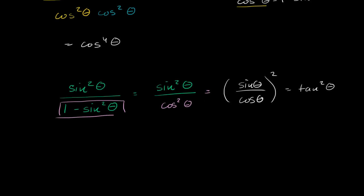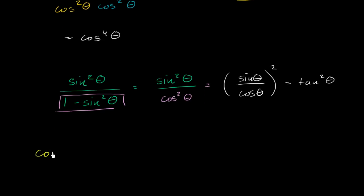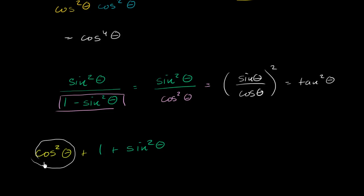Let's do one more example. Let's say we have cosine squared theta plus 1 plus sine squared theta. You might be tempted to look for an identity for 1 plus sine squared theta, but this is really about rearranging it to recognize that cosine squared theta plus sine squared theta equals 1. So this is going to be 1 plus 1, which equals 2.